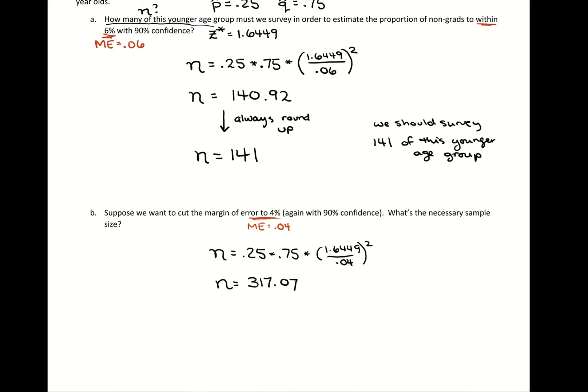So if I rounded down here, if I took this 317 and rounded it down, I've introduced more error. To have 4% margin of error, I would need to talk to 317.07 people, but we can't talk to a decimal of a person.